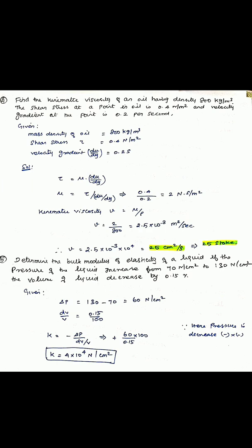Problem 4: Find the kinematic viscosity of an oil having density 800 kg/m³. The shear stress at a point is 0.4 N/m² and the velocity gradient is 0.2 per second. Kinematic viscosity nu equals dynamic viscosity mu divided by rho. From tau equals mu into du/dy: mu equals 0.4 / 0.2 equals 2 N·s/m². Kinematic viscosity equals 2 / 800 equals 2.5 × 10⁻³ m²/s, which equals 25 Stokes.